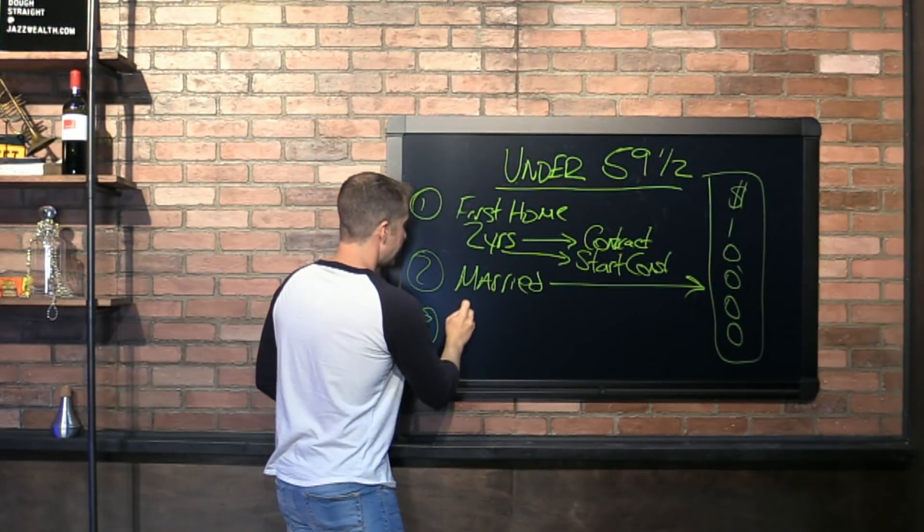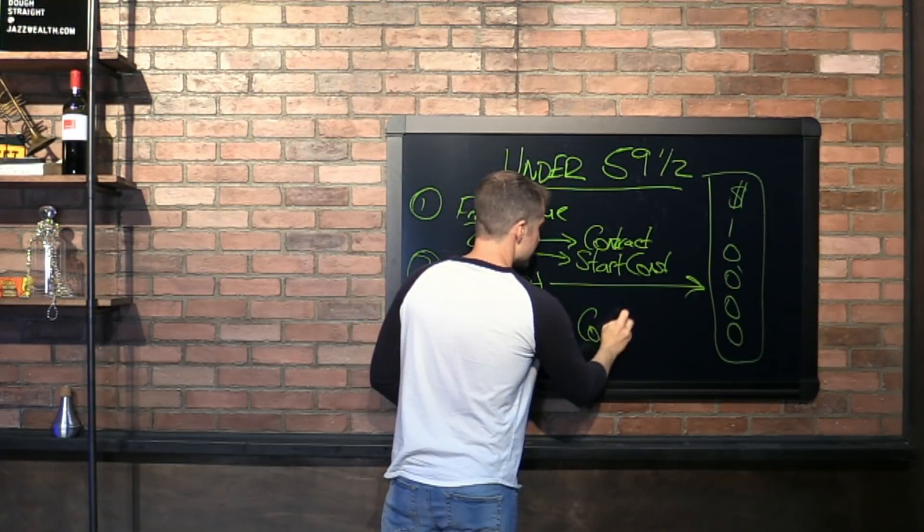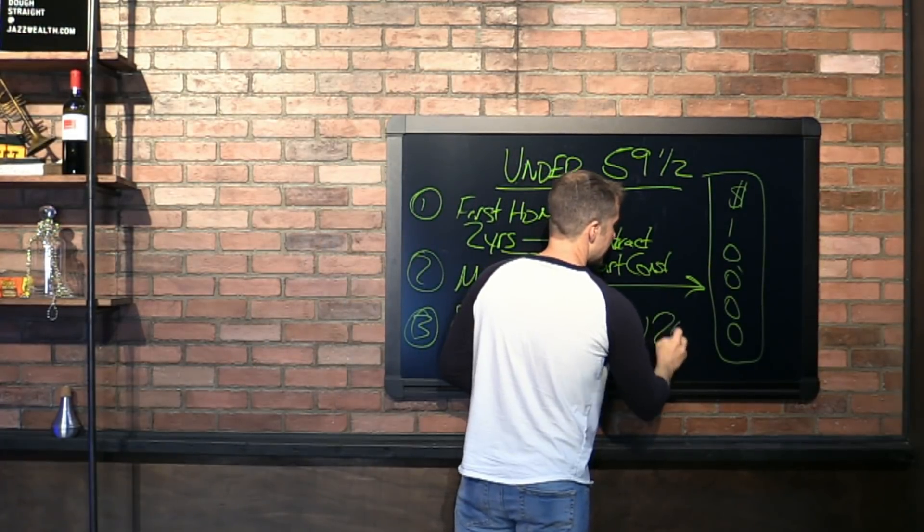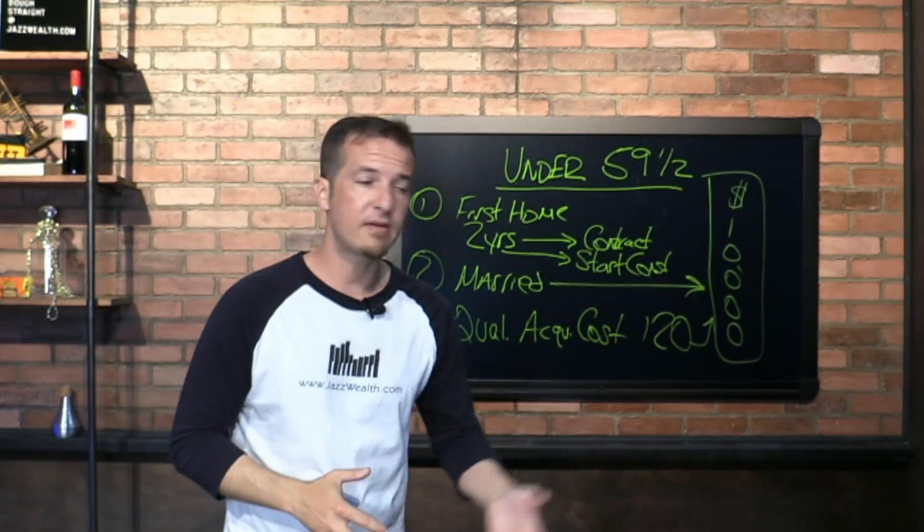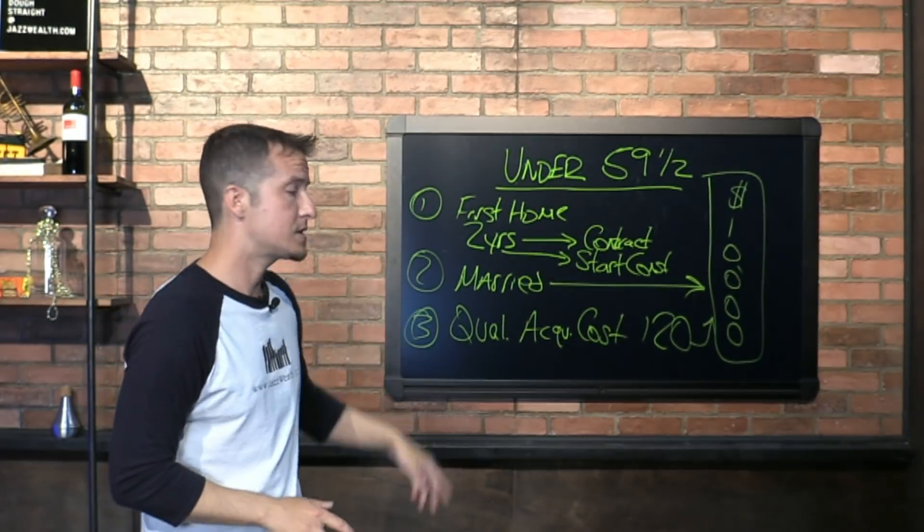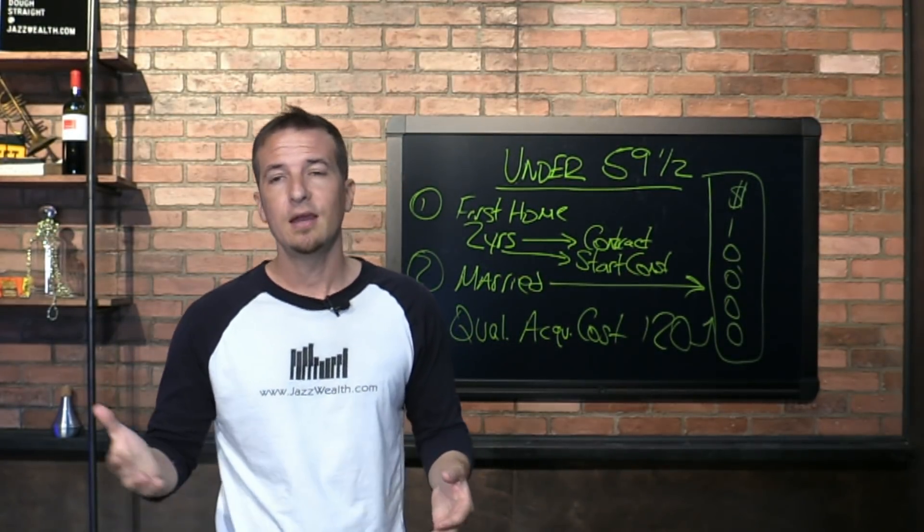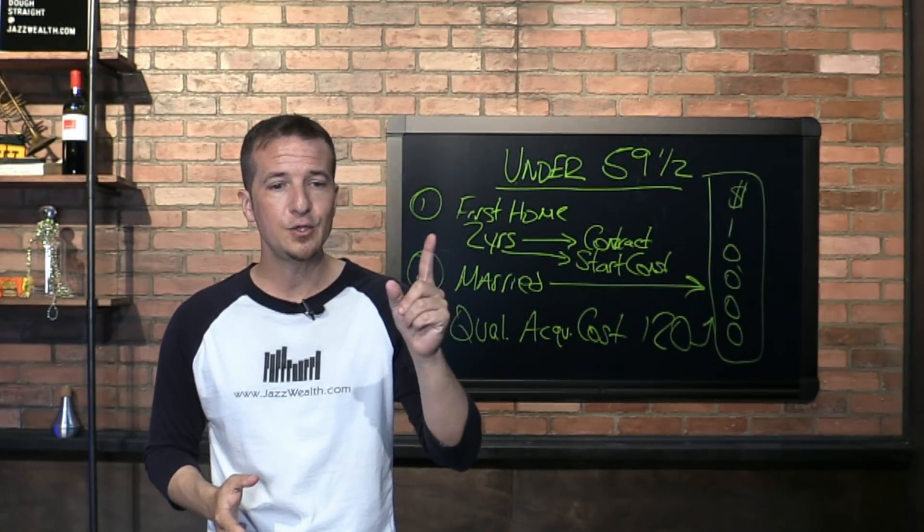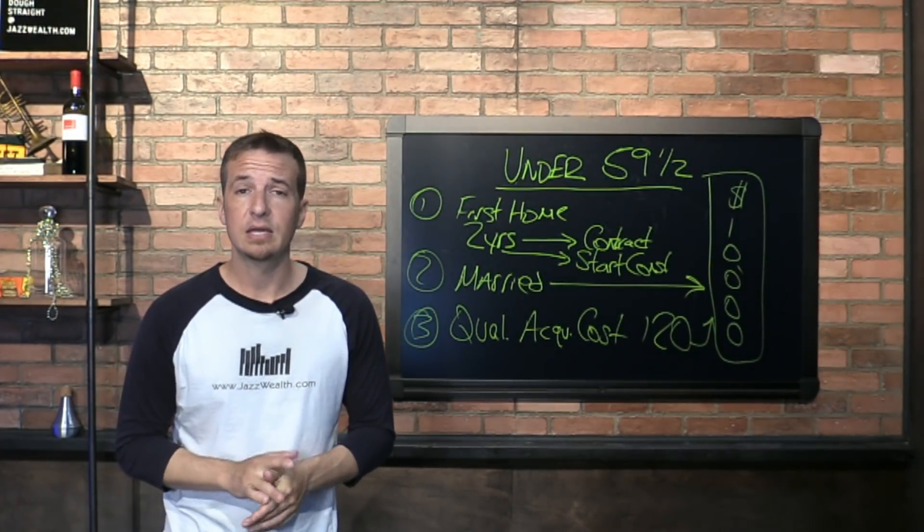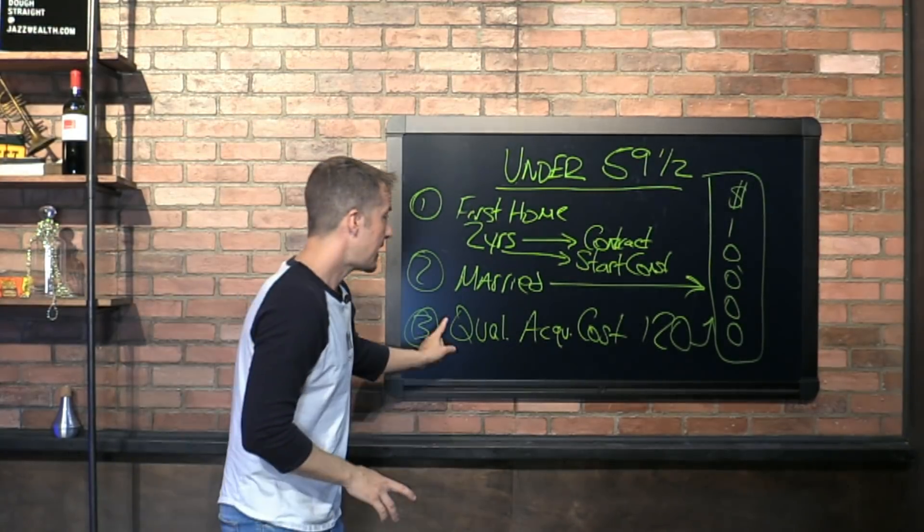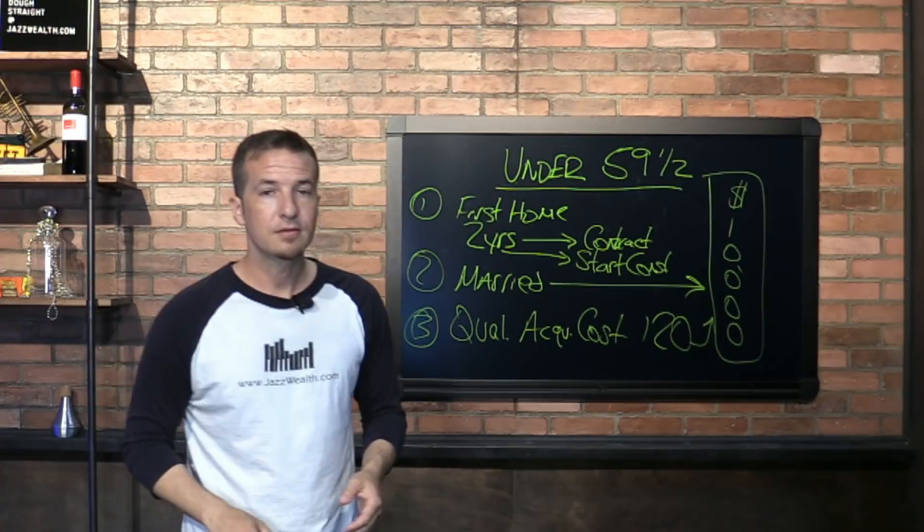All right. Number three, you got to use the money for qualified acquisition costs. I believe is the word that the IRS uses. Qualified acquisition costs. And you got to do it within 120 days, that $10,000 that you take out. You don't do it within 120 days, deal falls through, you change your mind, whatever, you can put the money back. It's not a big deal, but you got to use it for qualified acquisition costs. What is qualified acquisition costs? Well, I actually looked it up on the IRS website just to see if they listed out anything. They list a few things, but basically their actual words are any usual or reasonable settlement financing or other closing costs. So leave it to the IRS to give you a little bit of a gray area, though they do get specific on the page. Just know you can't take the money out, say you're going to buy a house, the deal falls through and you go, I will start a business instead. Don't do that. The IRS is going to find out.